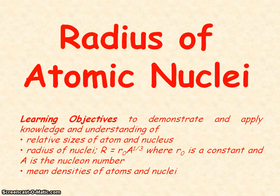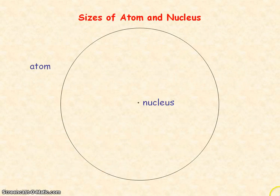We're going to be looking at the radius of atomic nuclei. The size of an atom is in the order of 10 to the minus 10 metres and the size of the nucleus is in the order of 10 to the minus 15 to 10 to the minus 14 metres.